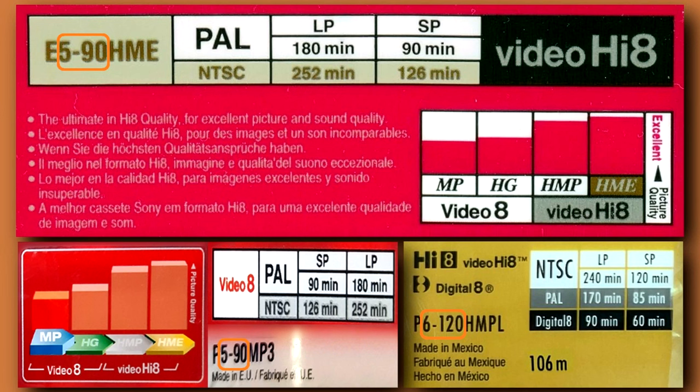The number after the dash indicates recording time, which is about one-third shorter for PAL compared to NTSC. So a P5-90 tape is equivalent to P6-126, and similarly a P6-120 tape is equivalent to P5-85.